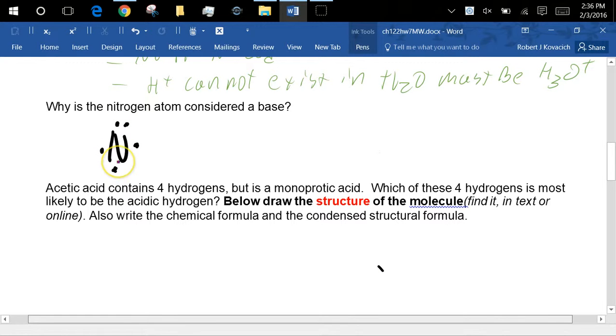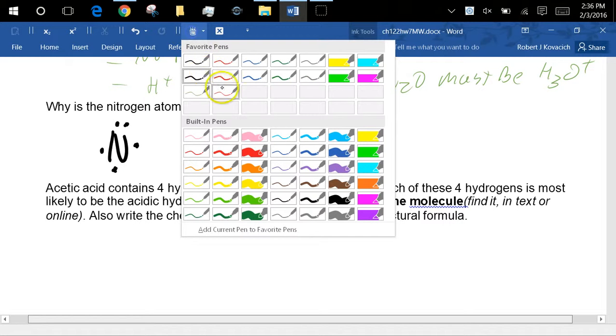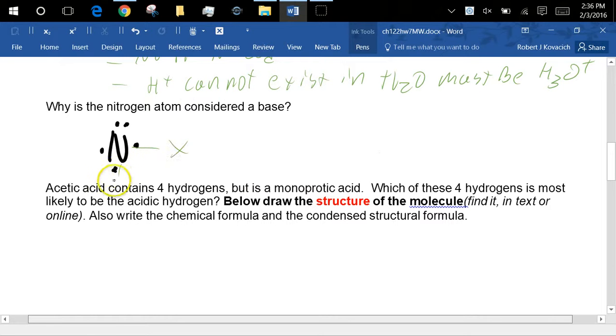So here's the Lewis structure for the nitrogen atom. And usually what you get is there's a bond over here with something and a bond here with something and a bond here with something. And then these two electrons are a lone pair to be donated. So that lone pair of electrons on top of that nitrogen is your base. It's not just the atom. That atom can be inside of a molecule and those lone pairs are still available to react with.